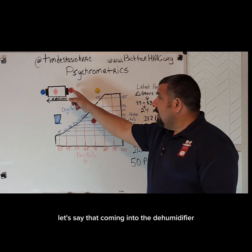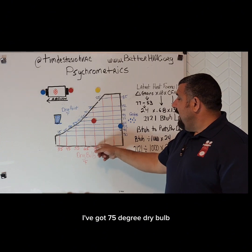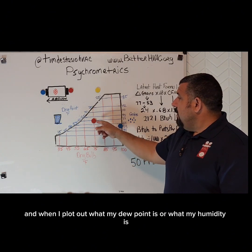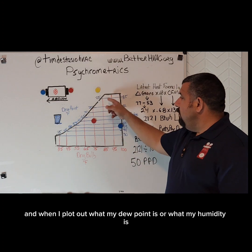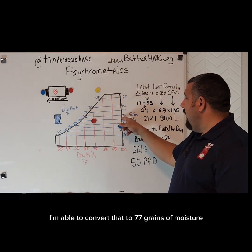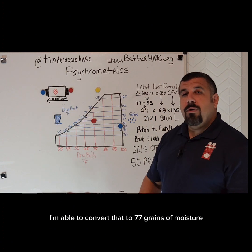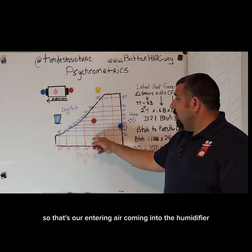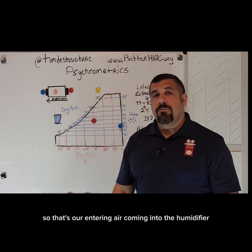Let's say that coming into the dehumidifier, I've got 75 degree dry bulb. And when I plot out what my dew point is or what my humidity is, I'm able to convert that to 77 grains of moisture. So that's our entering air coming into the dehumidifier.